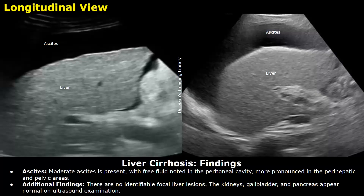Ascites: moderate ascites is present with free fluid noted in the peritoneal cavity, more pronounced in the perihepatic and pelvic areas. Additional findings: there are no identifiable focal liver lesions. The kidneys, gallbladder, and pancreas appear normal on ultrasound examination.